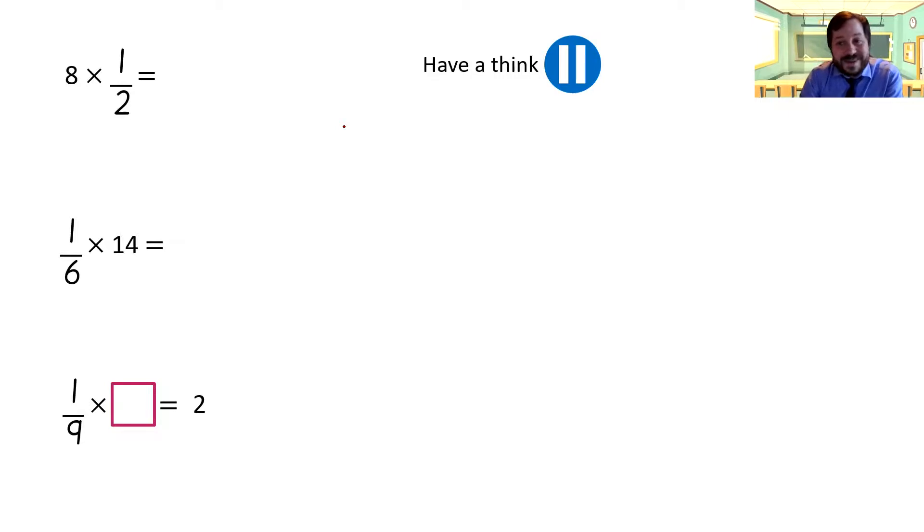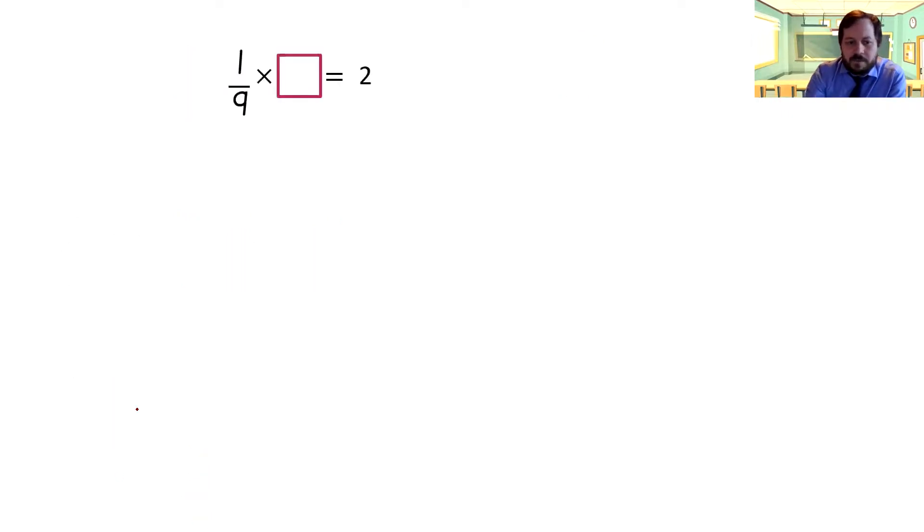Okay, so surprisingly enough, the answer to the first one is eight times one, which is eight, and then we convert the improper fraction. How many twos fit into eight, which is four, with no left over, so it's four. Then one times fourteen is fourteen-sixths. Then we see how many sixes fit into fourteen, where that's two with two left over, and two-sixths is the same as one-third. So one times something equals two whole ones. Well, two whole ones is the same as two times nine is eighteen, so it's eighteen-ninths. So we've got to times it by eighteen.